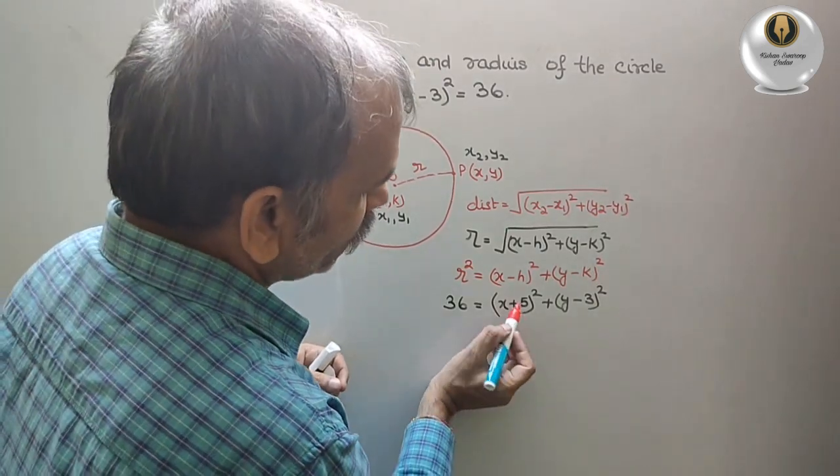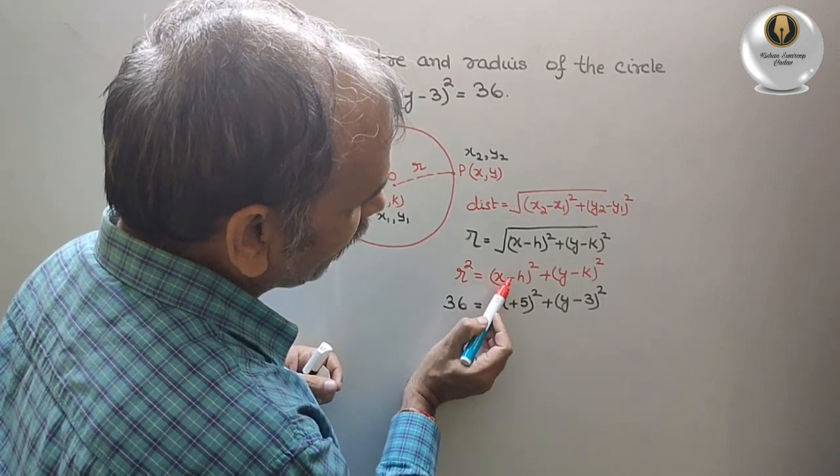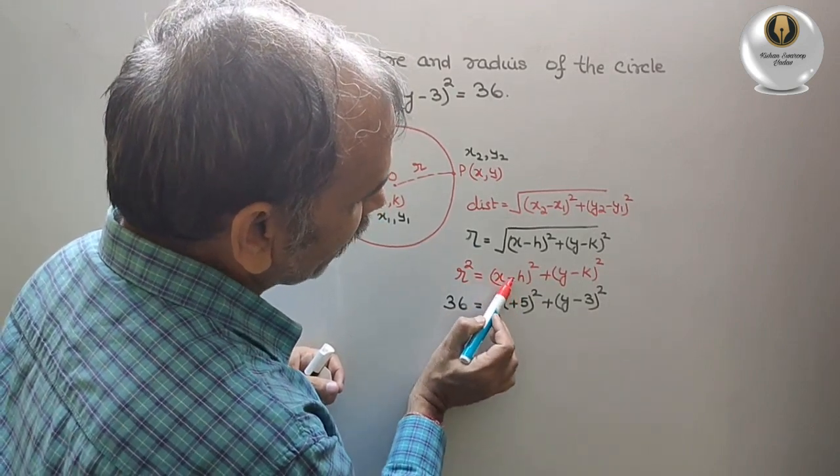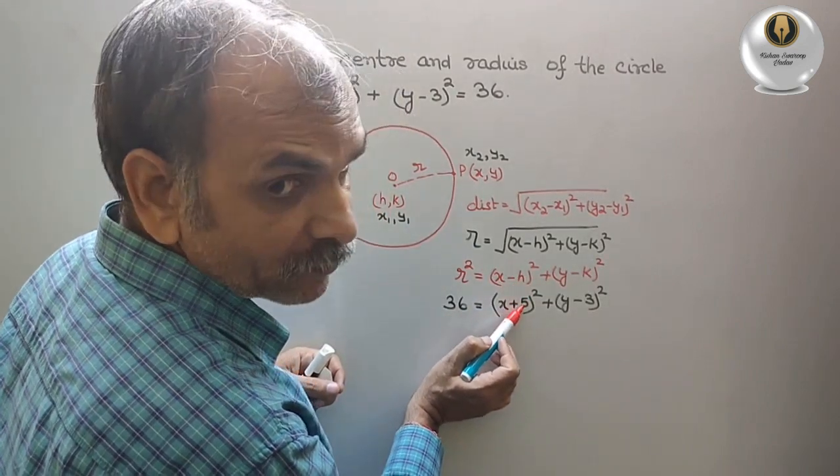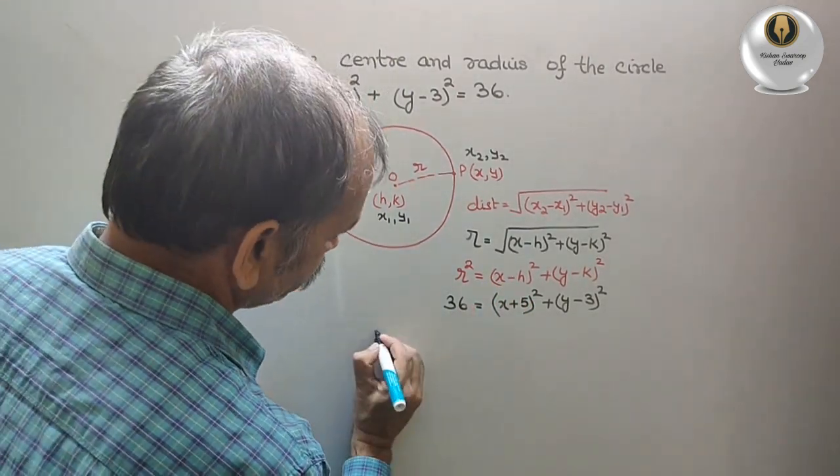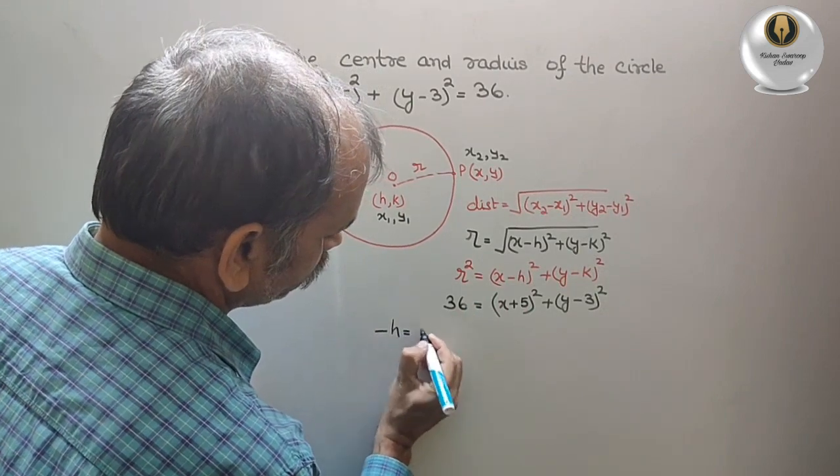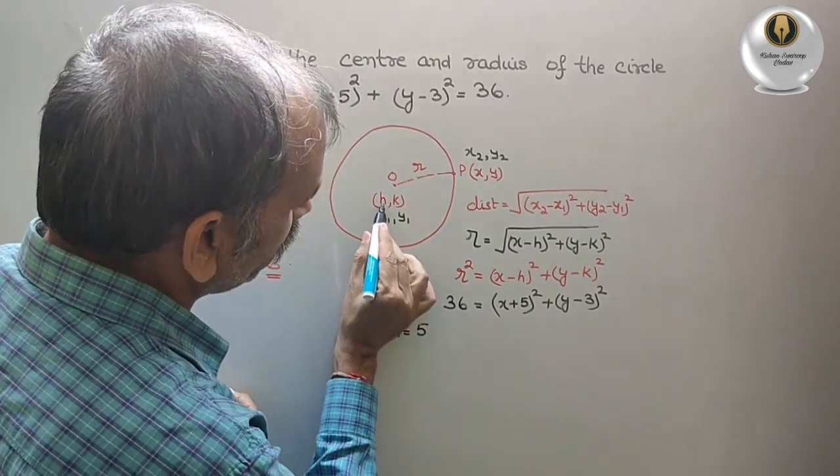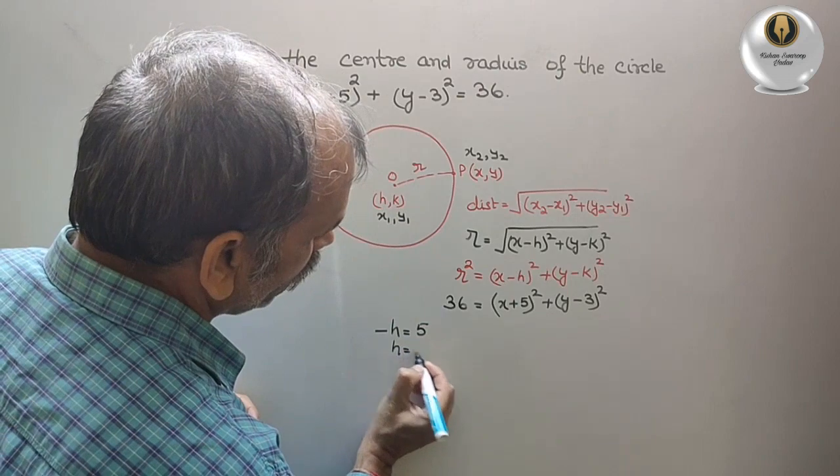Next, you can see minus h is 5. Minus h is 5, so what is your h? Minus 5.